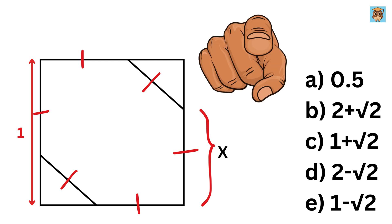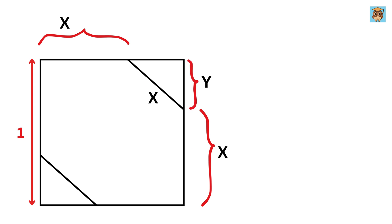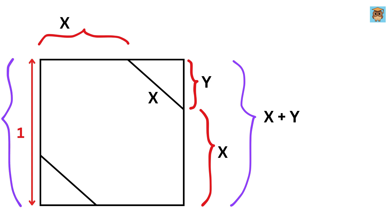Since all the sides of this hexagon are of equal length, this side is also equal to X, and this one too. Now let us label this remaining side length as Y. The length of the square will be equal to X plus Y, and since this length equals one unit, we get X plus Y equals 1, or Y equals 1 minus X.